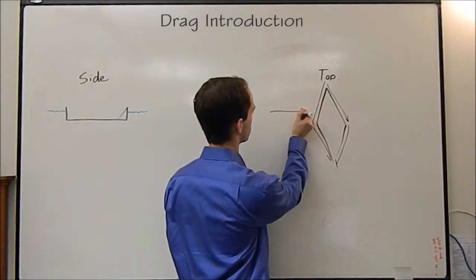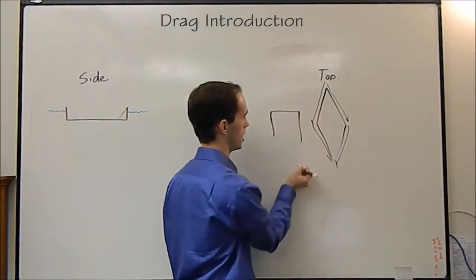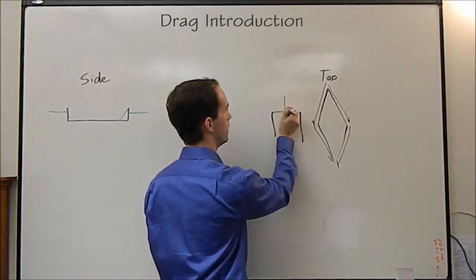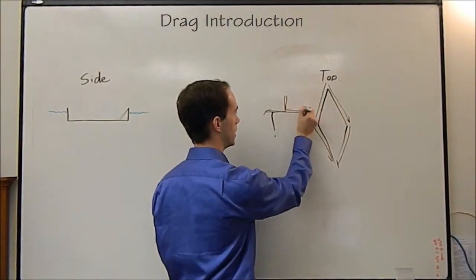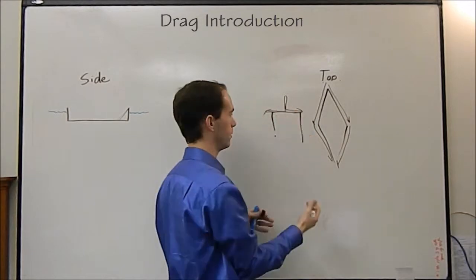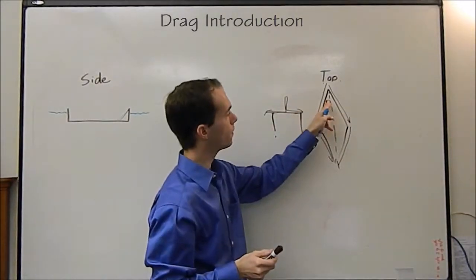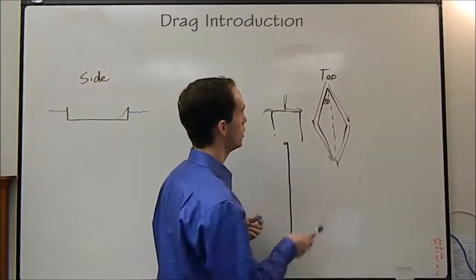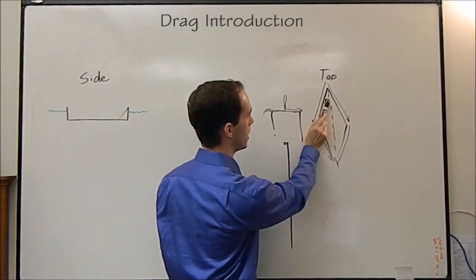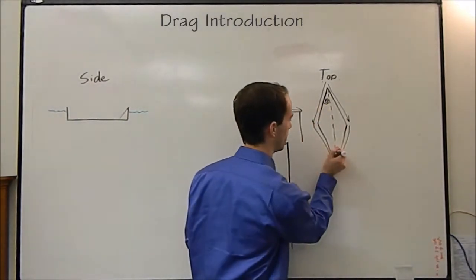What that means is if we go back to our old hull shape, that's the square box, this is a 90 degree entry. Water's coming in, it's making right and left turns and going out like that. You want this angle to be as small as possible.